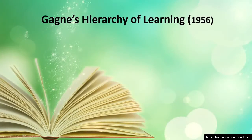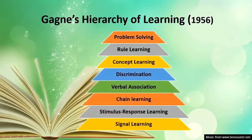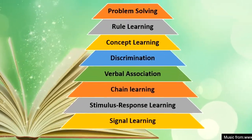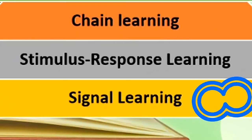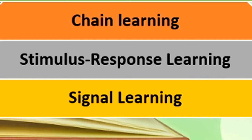Dear learners, there are different types of learning and many psychologists have suggested different forms. Today I will briefly introduce Gagné's hierarchy of learning, which he proposed in 1956. Gagné described eight steps of learning in a hierarchical model. At the bottom is signal learning — an individual first learns some signals. Recall a child who cannot yet speak; they signal their needs and learn signals from their elders.